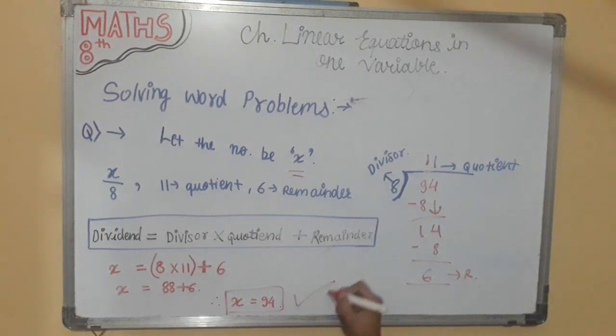And we got to know that this is our correct answer. X means dividend is equal to 94. I hope you have understood this. Next question is.